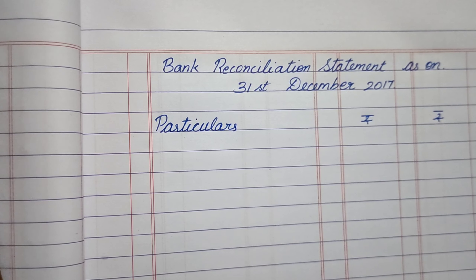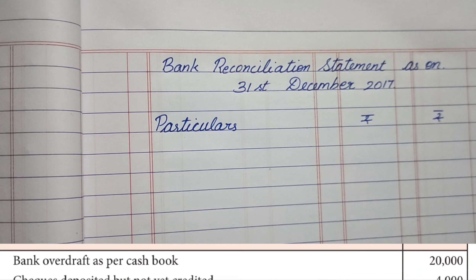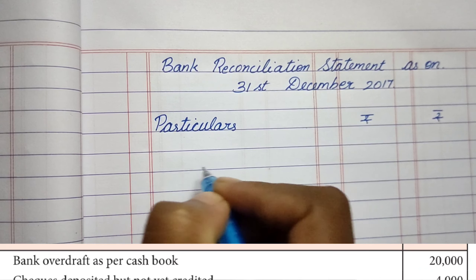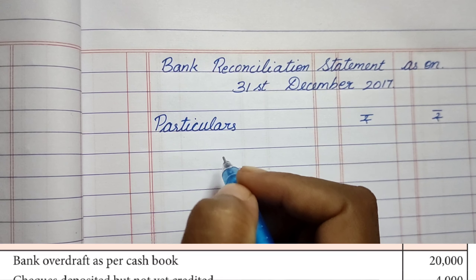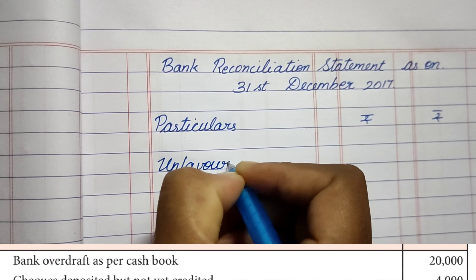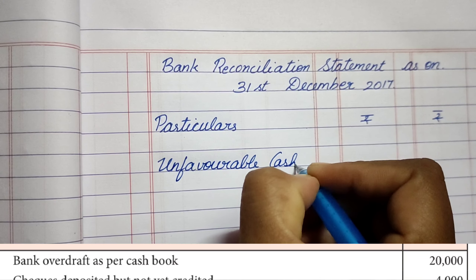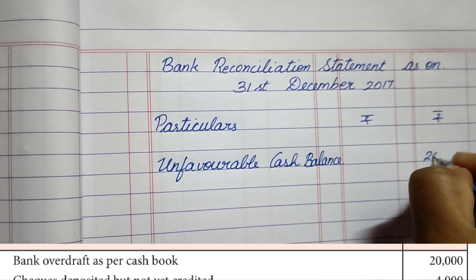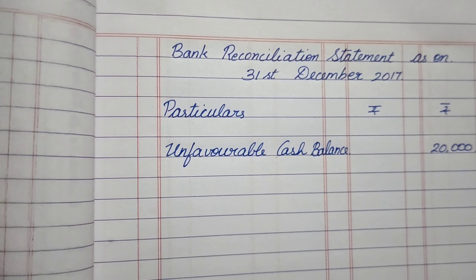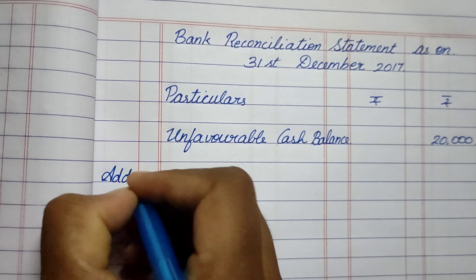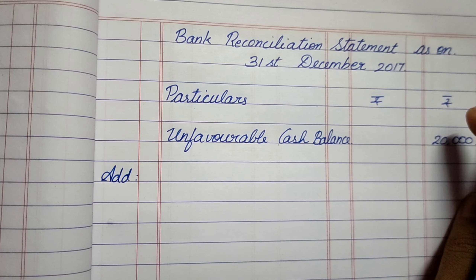We are ready with the format of the bank reconciliation statement. The first line given is bank overdraft as per cash book, which is the first line we write when we start the statement. In this sum it is an unfavorable cash balance because they've said it is an overdraft, so we write unfavorable cash balance and put the value of 20,000 in the outer column. After this I will set up the Add and Less categories, leaving roughly half a page for the seven transactions.